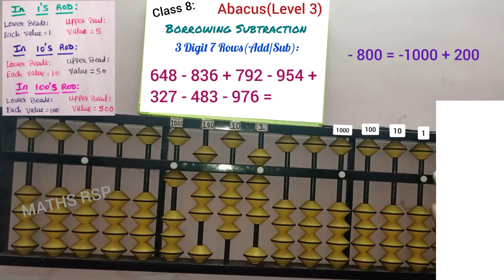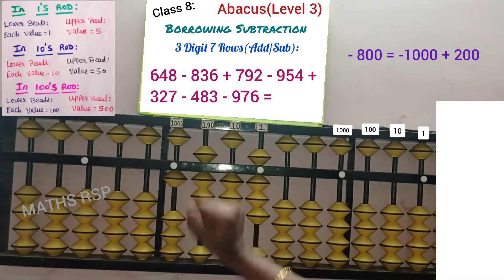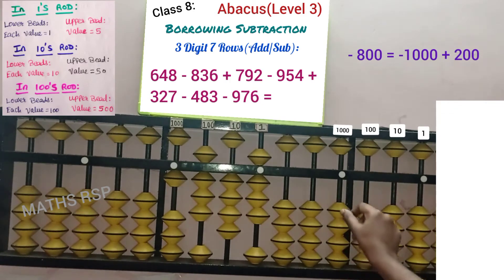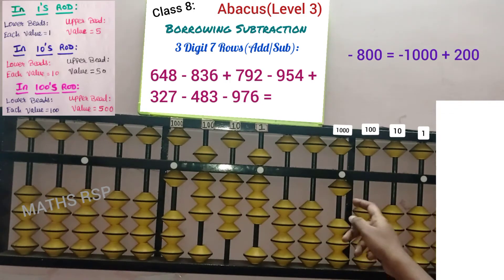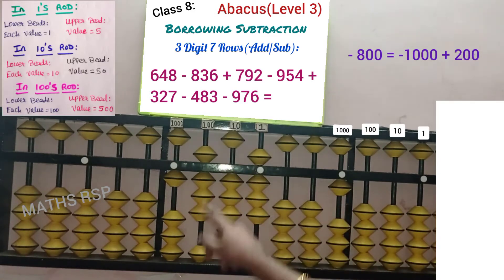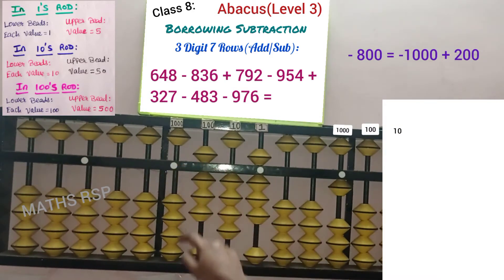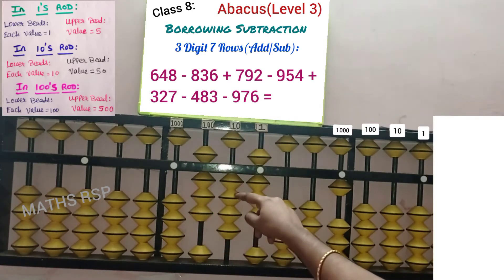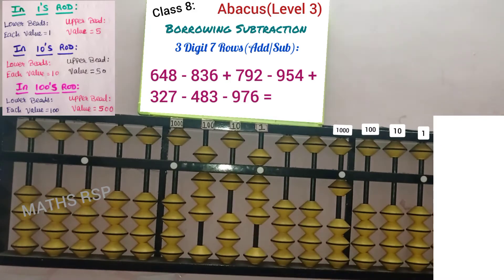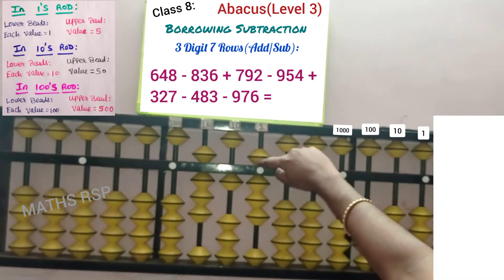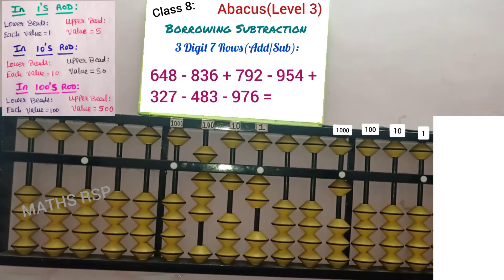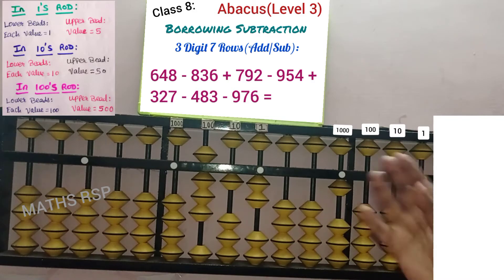Let's consider the right side part: 1 strad, 10, 100, 1000. In the 1000 strad we are getting 1 borrow bead, so in the same 1000 strad we should set that borrow bead. It means we should return these beads finally, otherwise we will get a negative answer. So minus 8 in the 100 strad means plus 2 completed and remove the bars in the 1000 strad — minus 1000 plus 200 is equal to minus 800 completed. Next, minus 3 — we can remove 3 beads directly. In the 1 strad remove 6 beads; beads are available, so we can remove directly. Second row completed.